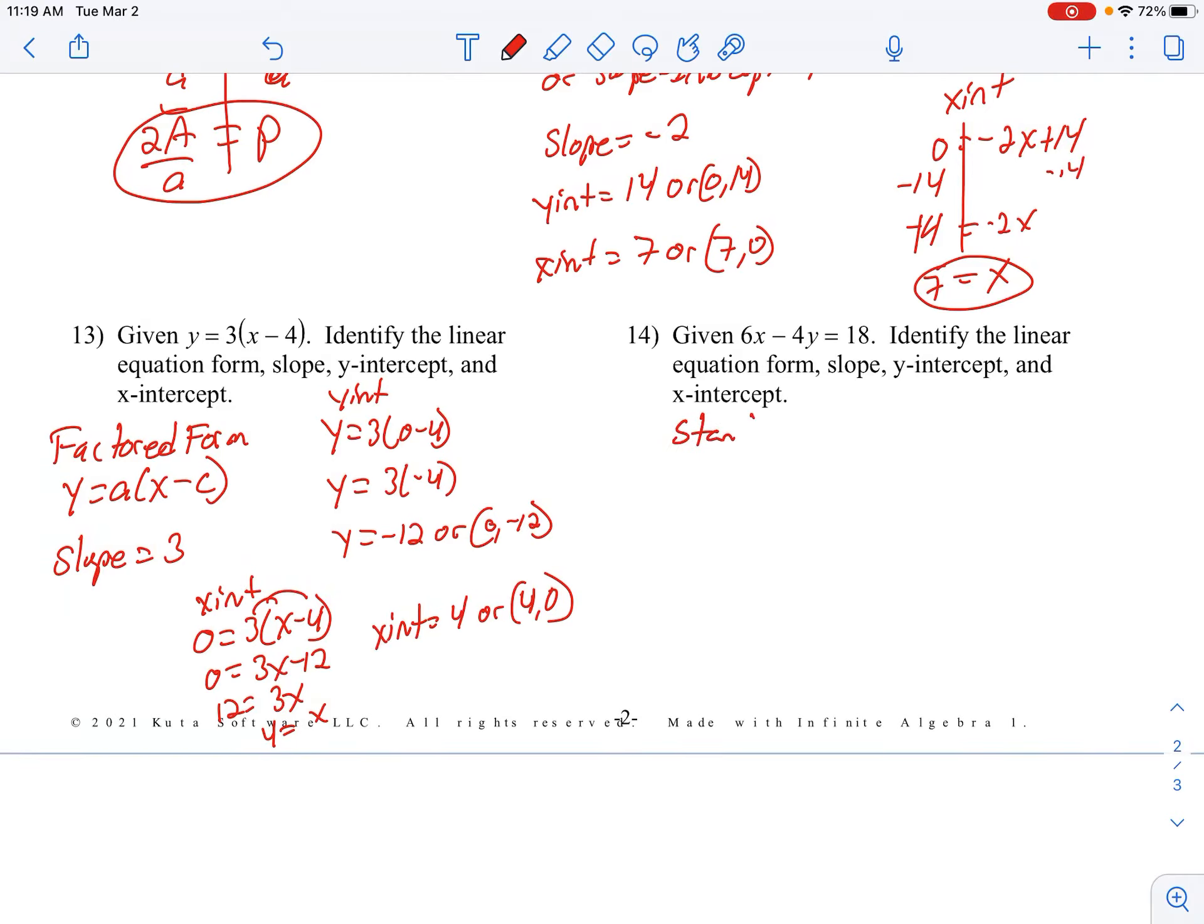And for the last one there, number 14, this is what we call standard form. Standard form looks like what's in front of you. So if you go back and look at your notes, AX plus BY equals C.